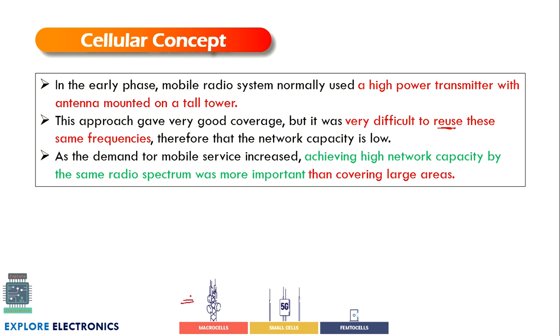The radio spectrum became more important than covering large areas. That is why macro cells at the initial stage were reduced to small cells and then femtocells, as the coverage area and cell size were reduced.